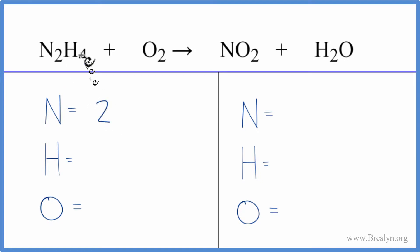We have two nitrogens, four hydrogens, and then two oxygen atoms on the reactant side. On the product side, we have one nitrogen, two hydrogens, and then two oxygens. But we need to make sure we count this oxygen here as well, so we have one more. That gives us a total of three oxygen atoms.